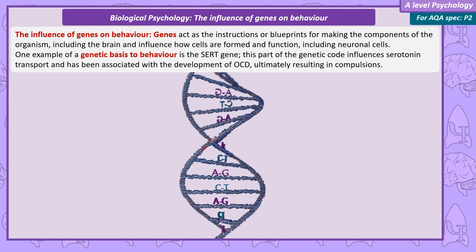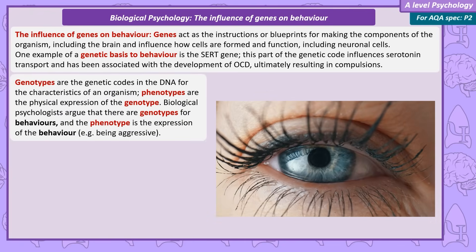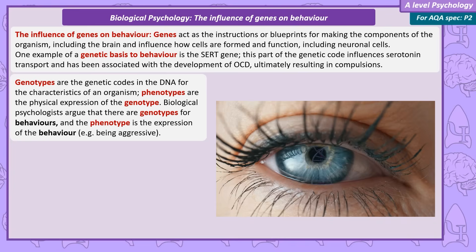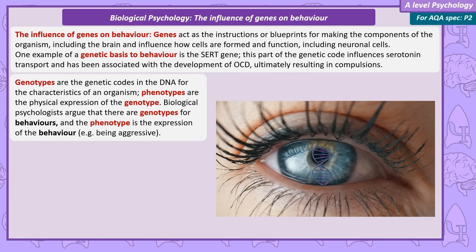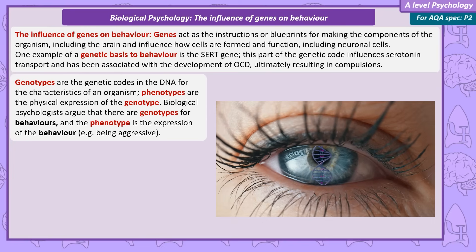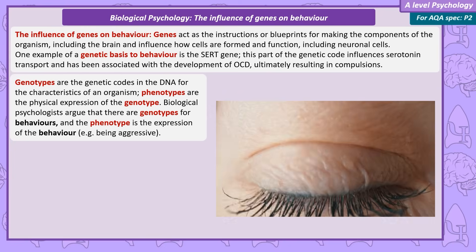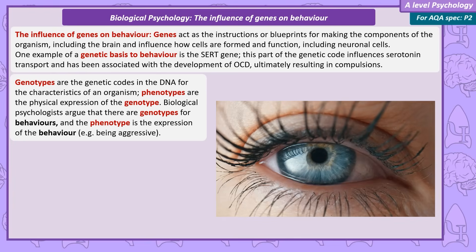We need to understand the terms genotype and phenotype, and it's helpful to use a physical example. If someone has blue eyes, the actual physical presence of blue eyes is the phenotype. They have blue eyes because they have the genes for blue eyes — this genetic code is their genotype. Biological psychologists argue there are genotypes for behaviour too, and the phenotype is the expression of the behaviour.